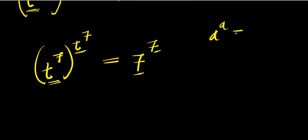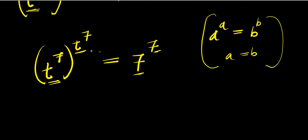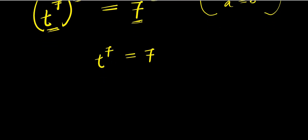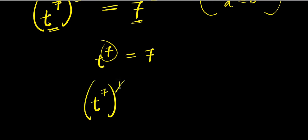Now if you have a^a = b^b, then a equals b. So since t^7 to the power of t^7 equals seven to the power of seven, that means t^7 equals seven.